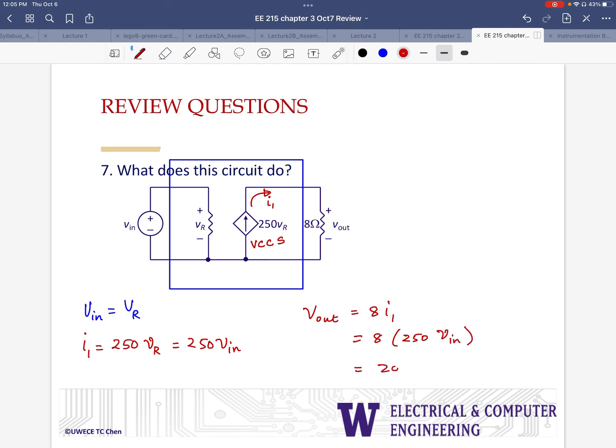This is going to be 2000 V in. So really what we have is our output is becoming 2000 times larger in terms of the input voltage. So it's a voltage amplification circuit. It's increasing the strength of the voltage by 2000 times. That's what this circuit is doing.